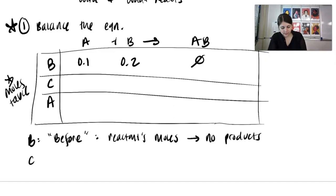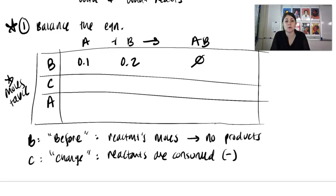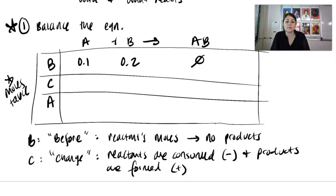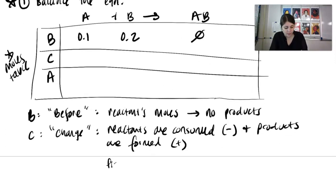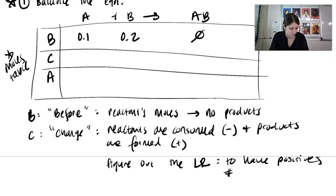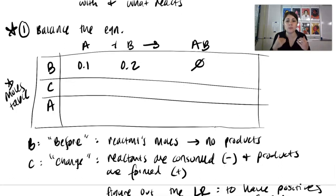C stands for 'change' — this can be a little bit tricky. What we know about chemical reactions: our reactants are going to be consumed, so we need to use negative values in our change row. With products, they are formed, so we will have positive values. With the change row, this is the most difficult part — you're going to try to figure out the limiting reactant. The goal is to have positive numbers in the end. The limiting reactant is the one that is completely used up.